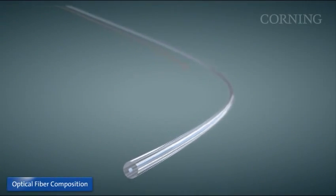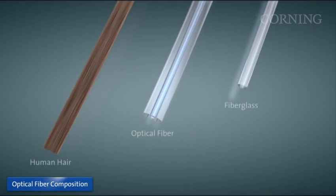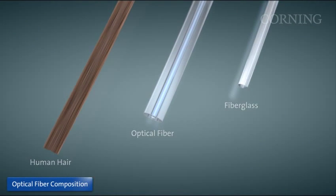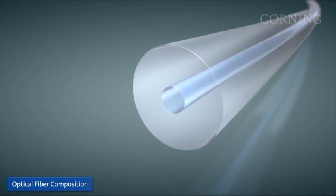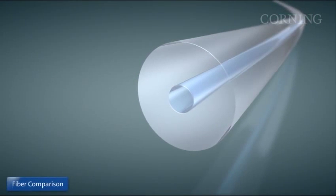Let's take a closer look at this revolutionary transmission medium. Optical fiber is very thin. One strand is about the diameter of a human hair. It is comprised of two basic elements made of glass, the core and the cladding.